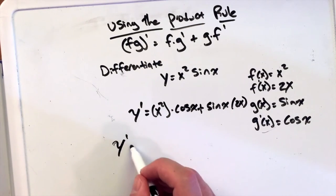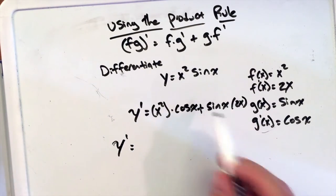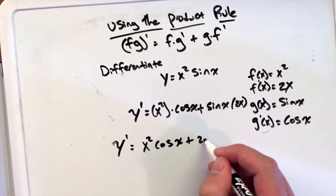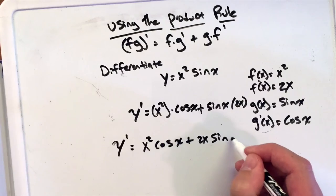Now if we want to clean this up, we can. Sometimes we put the x variables in front, so this is x squared cosine of x, plus 2x sine of x.